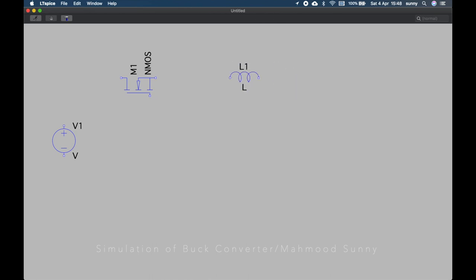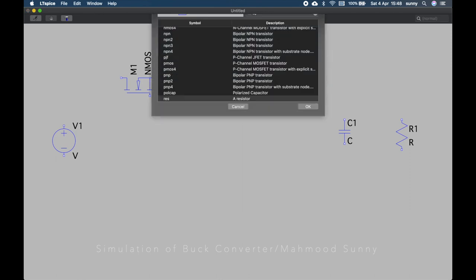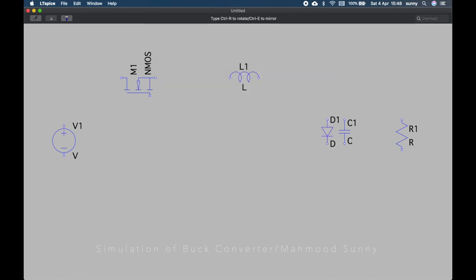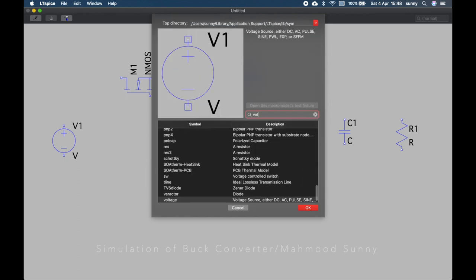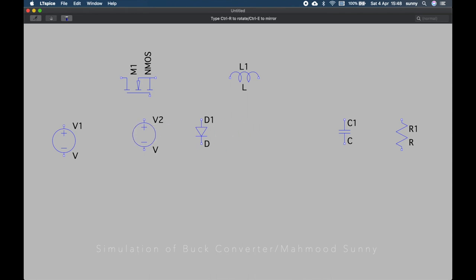Then we can get our capacitor and our load resistor. We can also get our diode. And to generate pulse voltage, we will use a normal voltage source in this simulation. Let's use F3 to bring up the wire and connect the components.